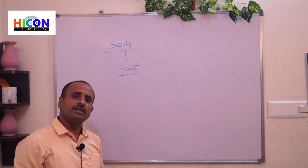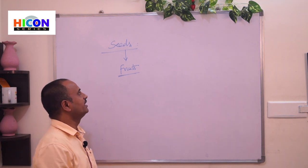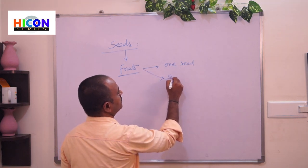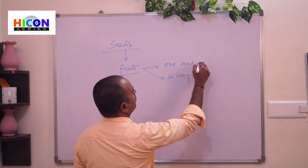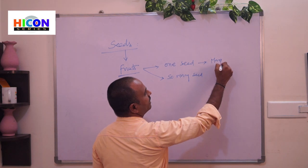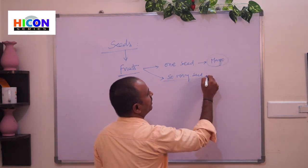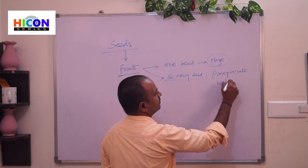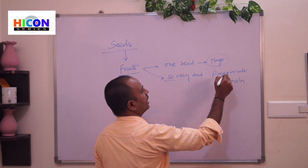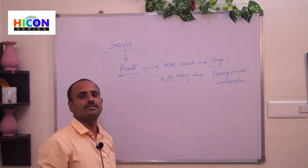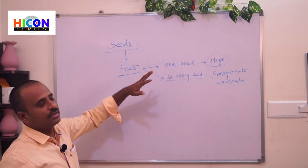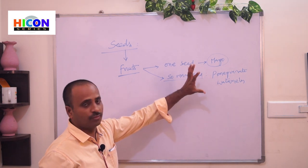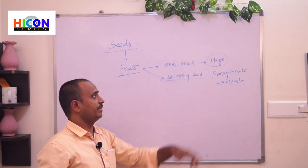Most fruits contain seeds. Some fruits contain only one seed, and some fruits contain many seeds. For example, mango fruit contains only one seed, whereas pomegranate and watermelon contain a large number of seeds. These seeds grow into a new plant.